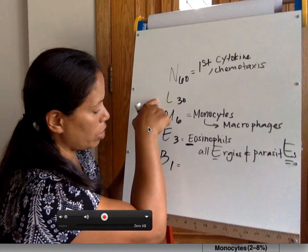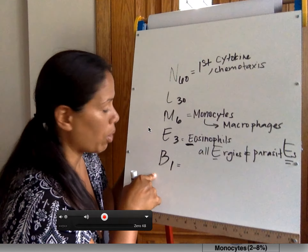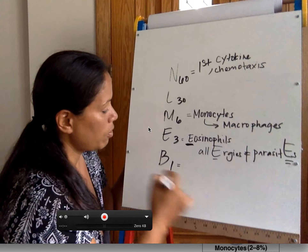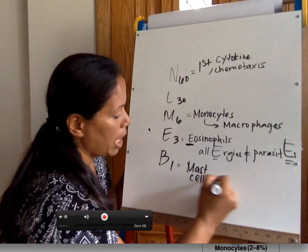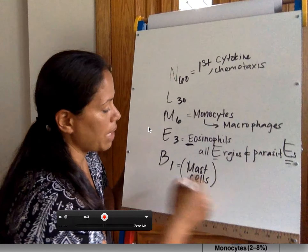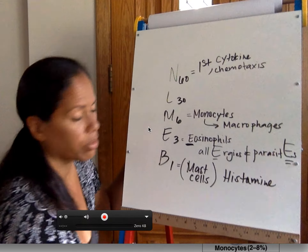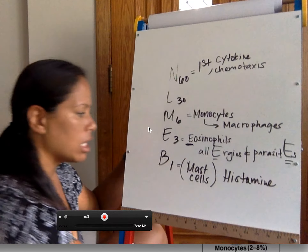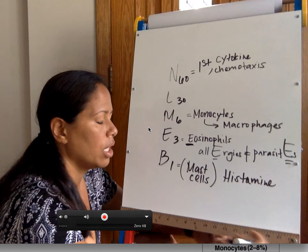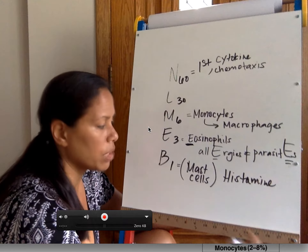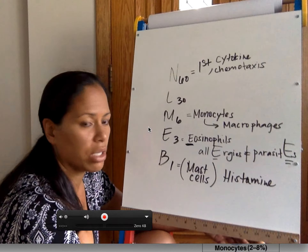The last one is basophils, which account for 1% of the overall white blood cell count. Basophils are similar to what we call mast cells, and both basophils and mast cells release histamine. Histamine is associated with allergic reaction — it increases the permeability of a blood vessel to increase the amount of white blood cells that can migrate out into the tissue to help with the infection.